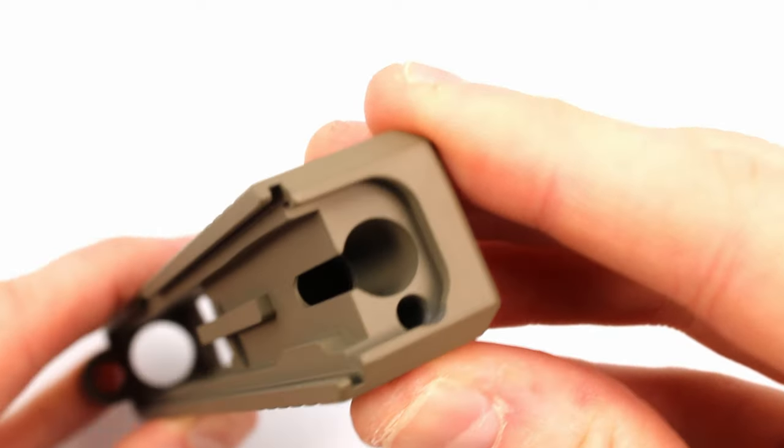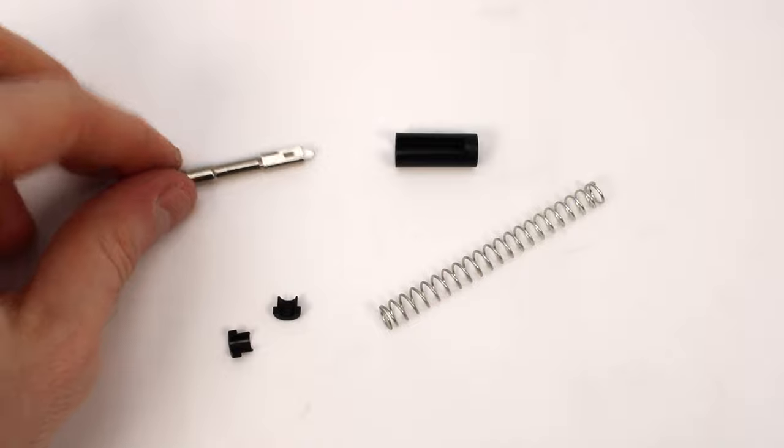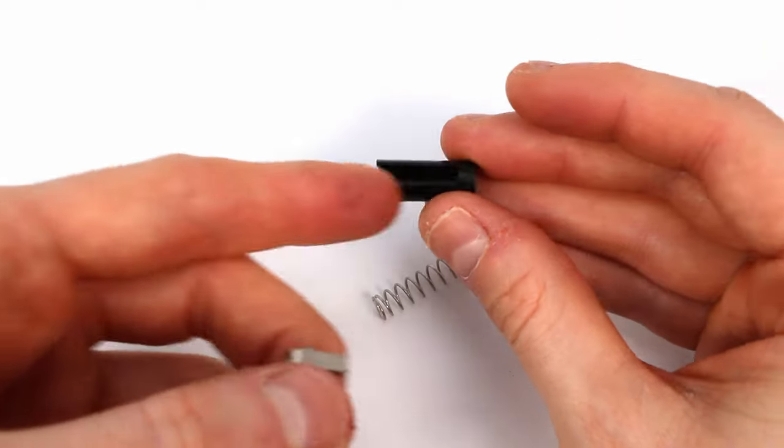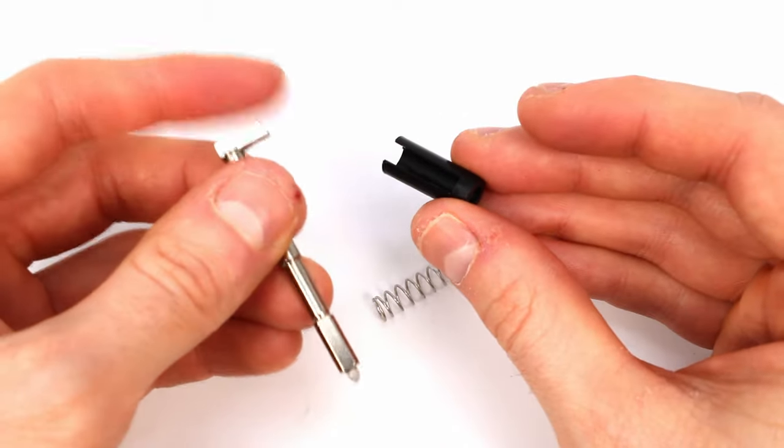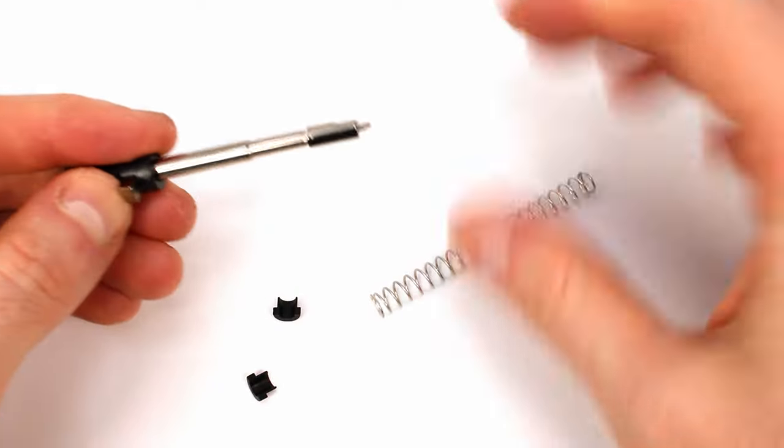Next we're going to do the firing pin assembly. For starters, grab the firing pin itself and grab this little hollow plastic piece that kind of looks like the channel liner we just installed. Now this has a little cutout right here and it lines up with the post on the bottom of the firing pin. Just slide it on here like so.